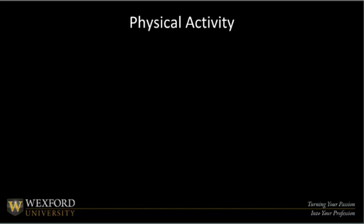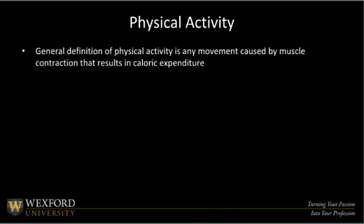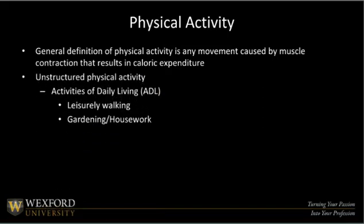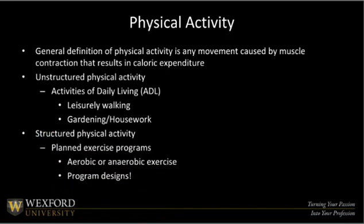We took a moment to define physical fitness, and now, because it's different by definition, we'll look at physical activity instead. Physical activity is more specific: it's any movement caused by muscular contraction that results in caloric expenditure. This includes unstructured activities of daily living, or ADLs — like gardening, washing your car, or doing housework — which still represent calorie burn above baseline. Then we also have the more structured, planned program design type workouts, including aerobic and anaerobic exercise, which is what we call program design.